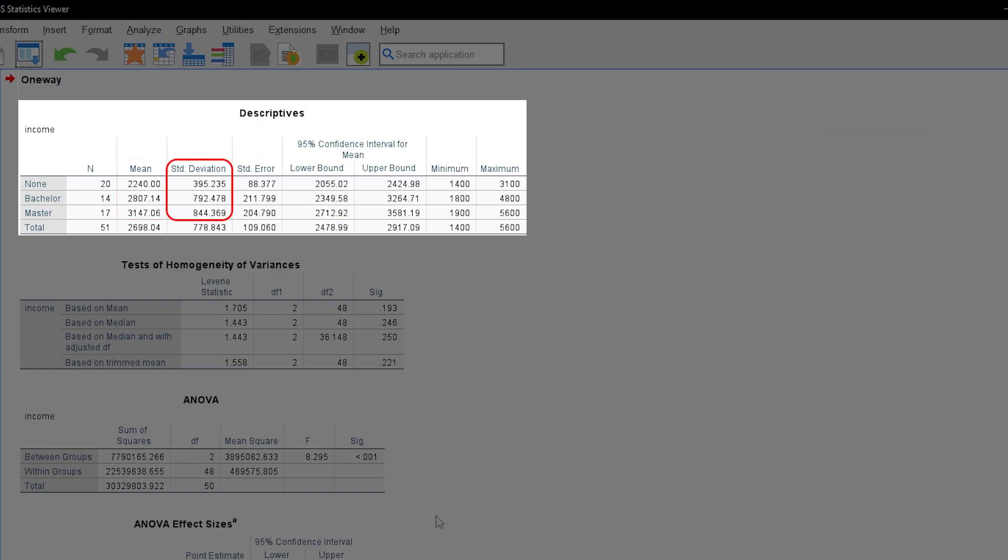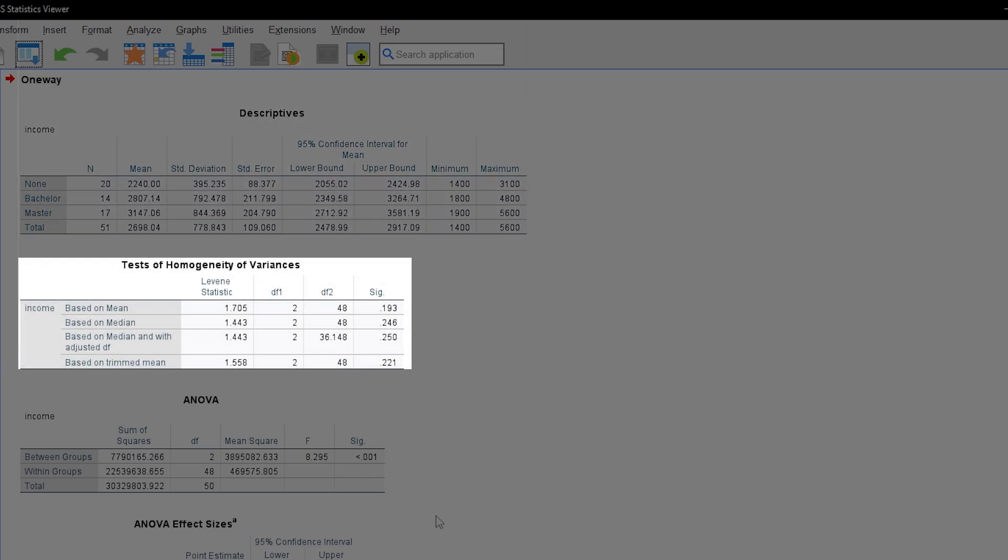The standard deviation tends to be higher as well, which is usually the case when the mean increases. Speaking of standard deviation, it is the square root of the variance. Since the standard deviation shows some discrepancy, the variance will likely also be unequal, hinting a violation of the assumption. The good old Levene's test however states no problem, as the test based on mean and median show no low enough p-value to reject the null hypothesis of equal variances.